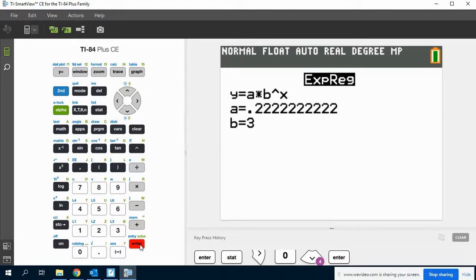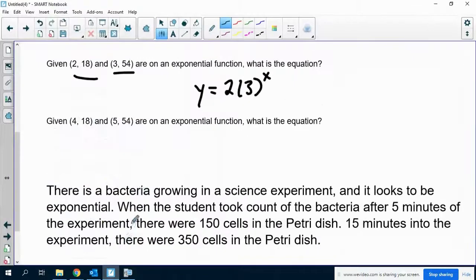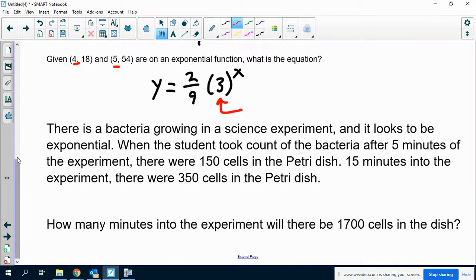Remember what the a represents. The a actually just represents the initial condition. So y equals 0.2 repeating, so that's 2 ninths times 3 to the x. So we're actually okay here, because this 3 is our growth rate, or how much it's multiplying by essentially every time there's an x change. But the a is just the constant, so like the initial amount. So the initial amount is the only thing that's different. And it doesn't really matter if the initial amount's different. That's okay. So if we have a horizontal shift, we're fine. A vertical shift, not so good.